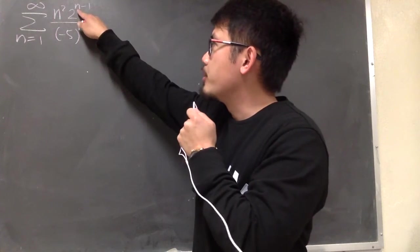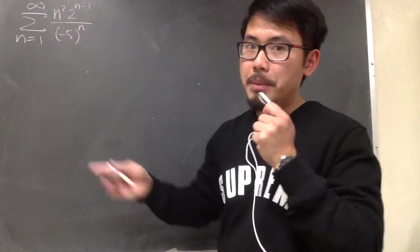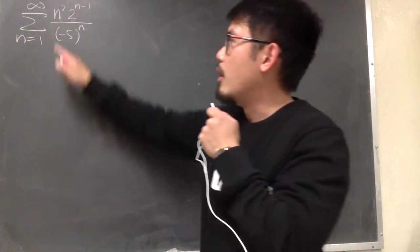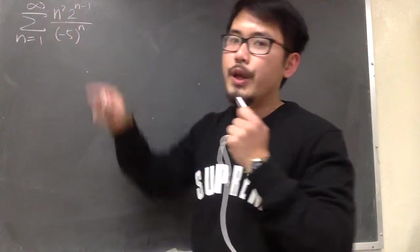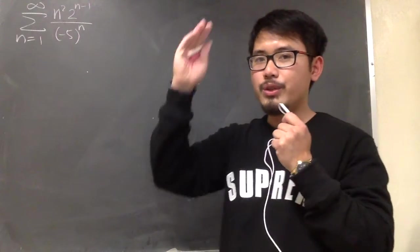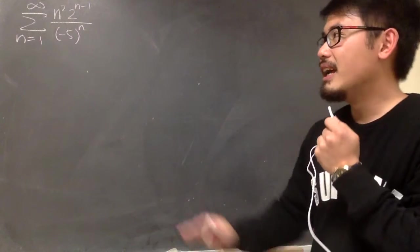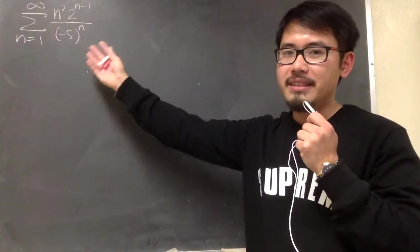We see we have the n in the exponent here and here, so maybe we can use the root test. But if you take the nth root of n squared, you will end up with n to the 2 over n power. Let's avoid that situation. So I would like to use the ratio test in this situation.